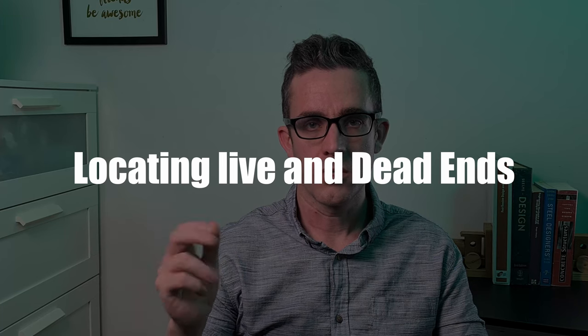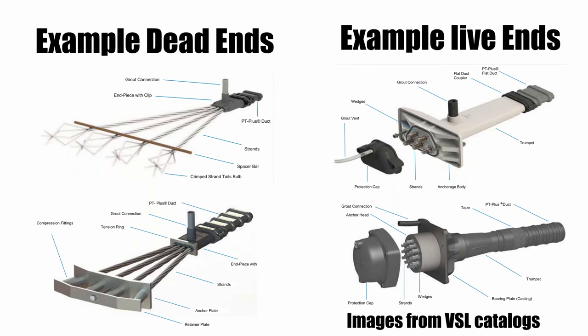We've gone through both where the high points and low points should be. Now we need to locate where dead end and live ends are. So what are dead end and live ends? Well live end is an end that we stress the tendons from. There'll be generally a jack approach to the tendons that are inside that structure that we stretch up to impart the tension forces inside that beam structure or slab. And dead end is the end that we're anchoring it from.